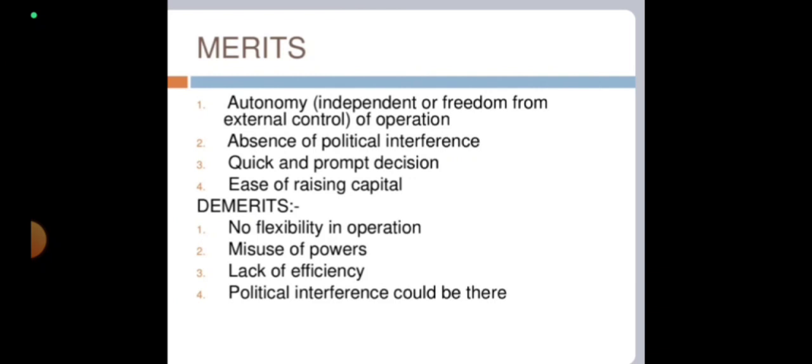Second, misuse of power — absolute authority makes absolute corruption, so the same issue exists here. Third, lack of efficiency — compared to private or multinational corporations, these organizations are less efficient. Fourth, political interference — although they have autonomy, decisions still have a certain degree of political impact on them sometimes.